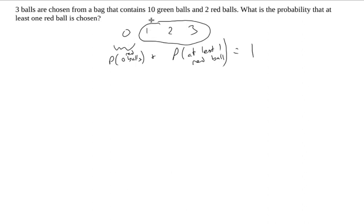Alternatively, I could figure out the probability of exactly one red ball plus the probability of two plus three. So I could do this either way. I'm going to choose to use the complement because it's fewer things to compute here.